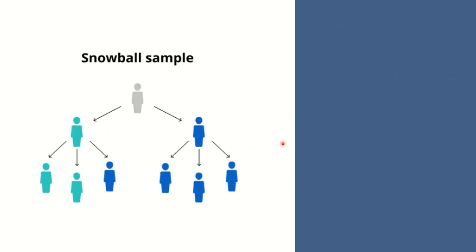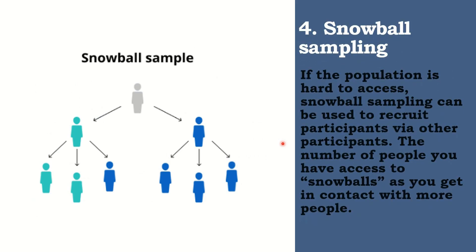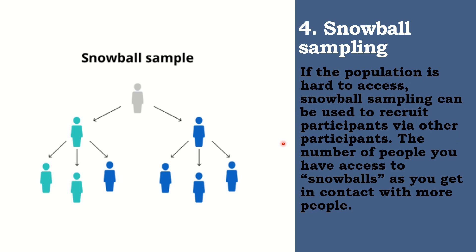Next, let's have the last type of non-probability sampling which is the snowball sampling. When we say snowball sampling, if the population is hard to access, snowball sampling can be used to recruit participants via other participants. Halimbawa, you are researching experiences of homelessness in your city. Since there's no list of all homeless people in the city, probability sampling is not possible. You will meet one person who agrees to participate in the research, and she puts you in contact with other homeless people that she knows in the area.